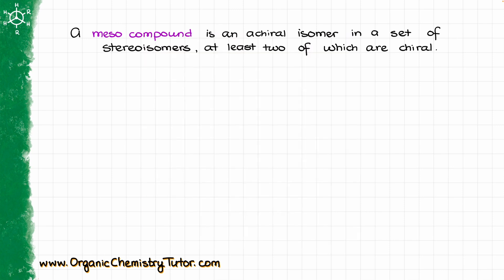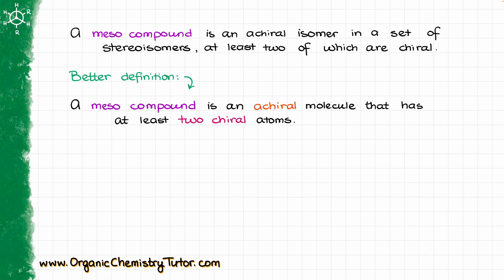What does that even mean? Does it mean that we need to know all possible stereoisomers to identify which one is meso? No, absolutely not. And since this definition is kind of hard to apply, we typically see a slightly different definition: a meso compound is an achiral molecule that has at least two chiral atoms.